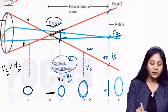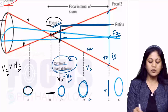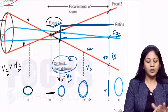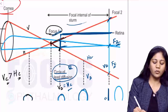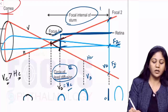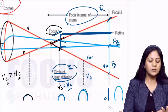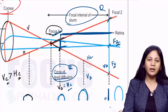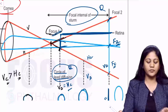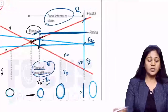The distance between Focus Number One and Focus Number Two is called the Focal Interval of Sturm.